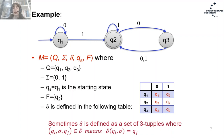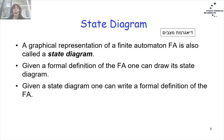Sometimes we can define the delta function as a 3-tuple, where we write Qi, sigma, Qj — meaning a transition from state Qi on input sigma moving to Qj. The graphical representation of the finite automaton is also called a state diagram. Given a formal definition of the finite automaton, one can draw its state diagram, and vice versa: given a state diagram, one can write a formal definition.